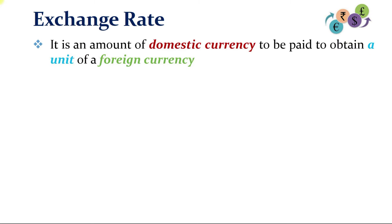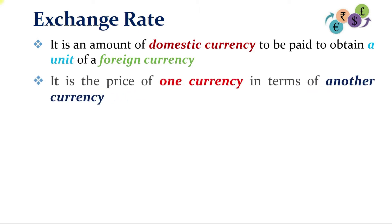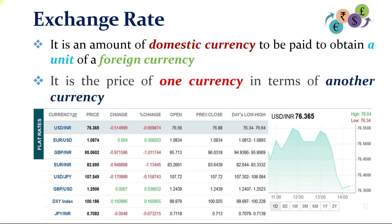The exact meaning of exchange rate is an amount of domestic currency required to obtain one unit of foreign currency. This can also be called the price of one currency in terms of another currency. Look at this chart, which I have sourced from Economic Times, which shows the exchange rates for various pairs of currencies.